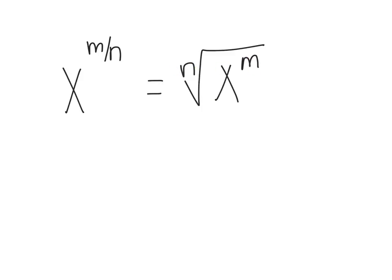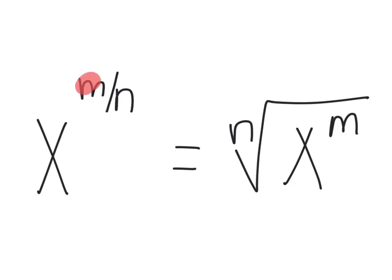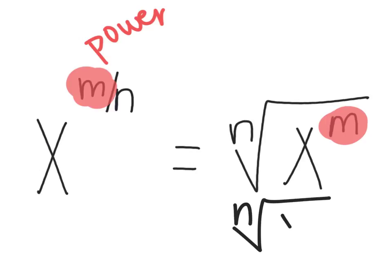So a couple of vocabulary words for you. So m is going to be considered your power, and that can be written a couple different places. It can be written inside like you see the m here. It could also be written as n to the x power, all of that to the m power. So it could be written on the outside up here, but it is going to be written in the place where you would normally see an exponent.